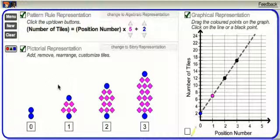The screen opens with three representations of a linear growing pattern: the pattern rule representation, a pictorial representation, and a graphical representation.